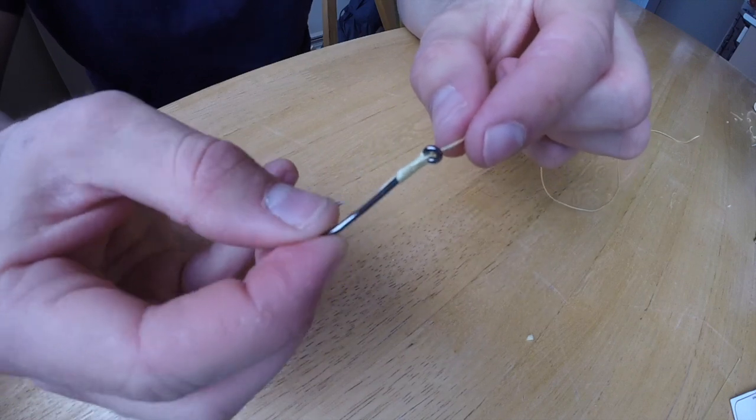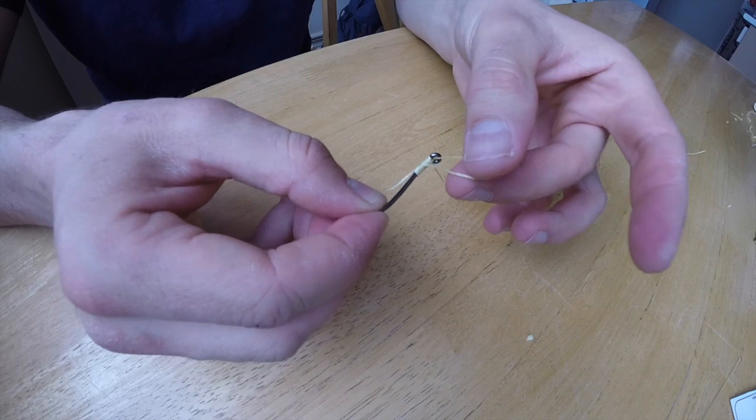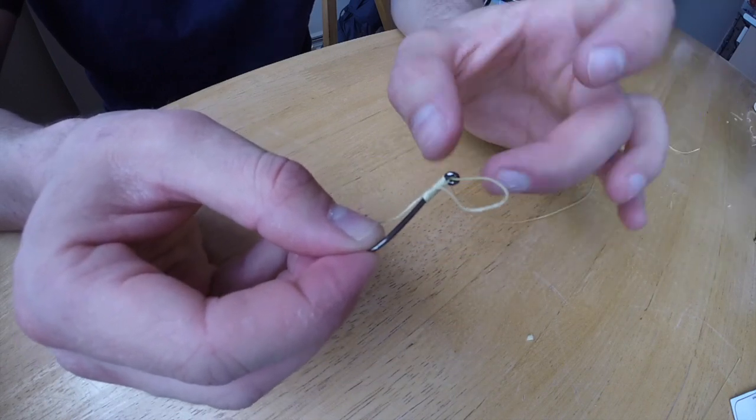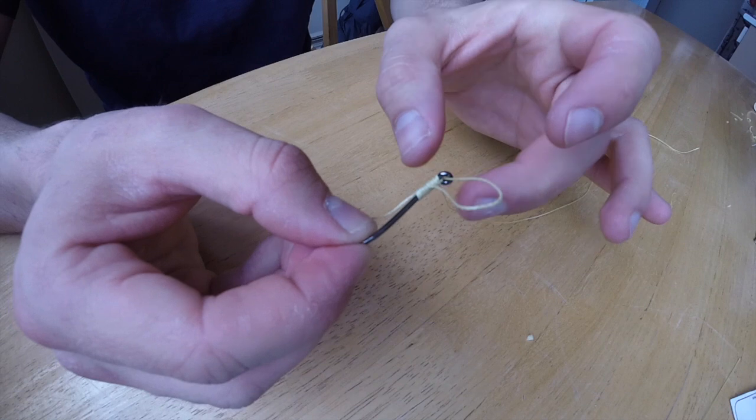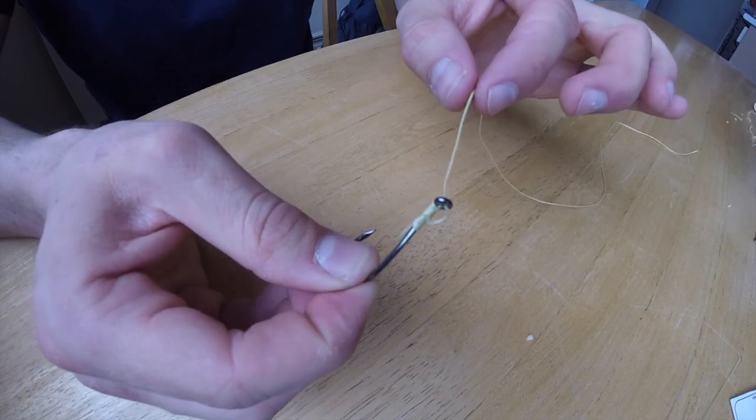And then see, you created yourself a little loop here where you can make it as big as you want. You can put the end of your roe sack where you tied it with your spider wire or whatever you use, put that through there.